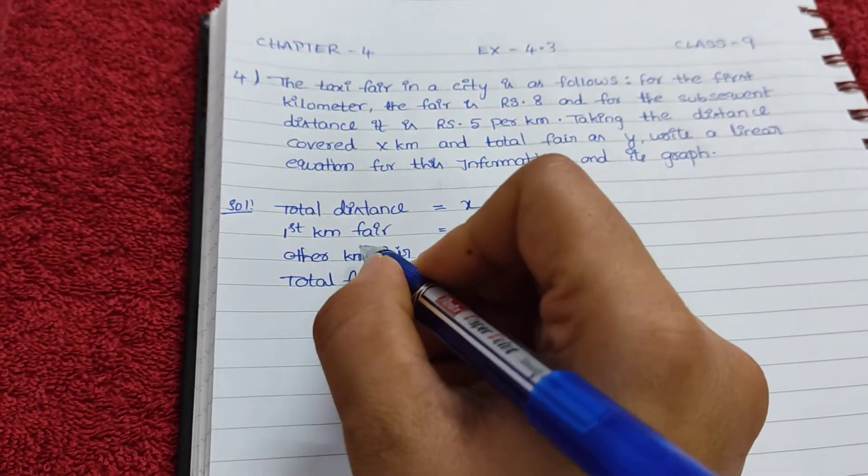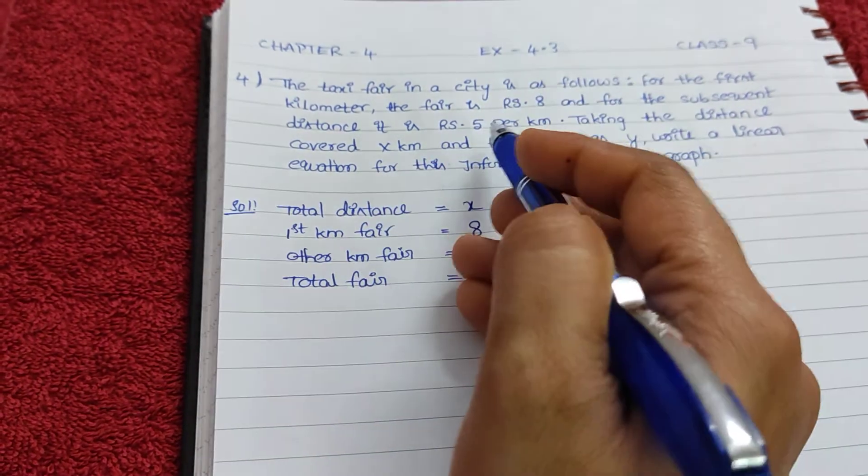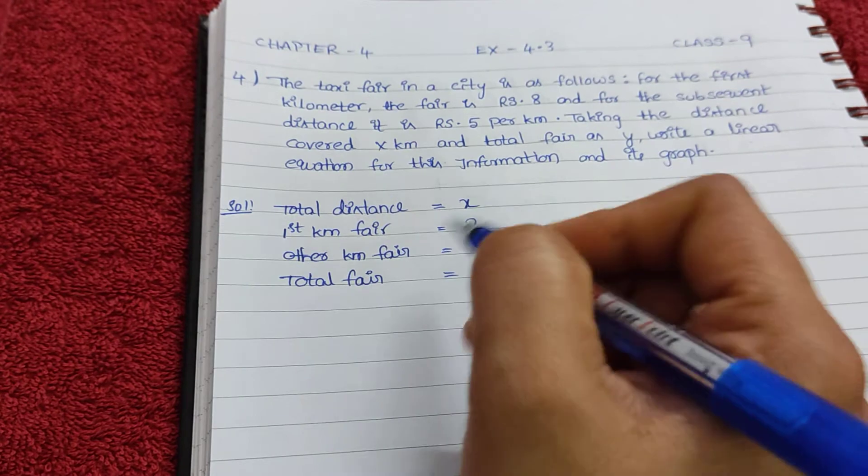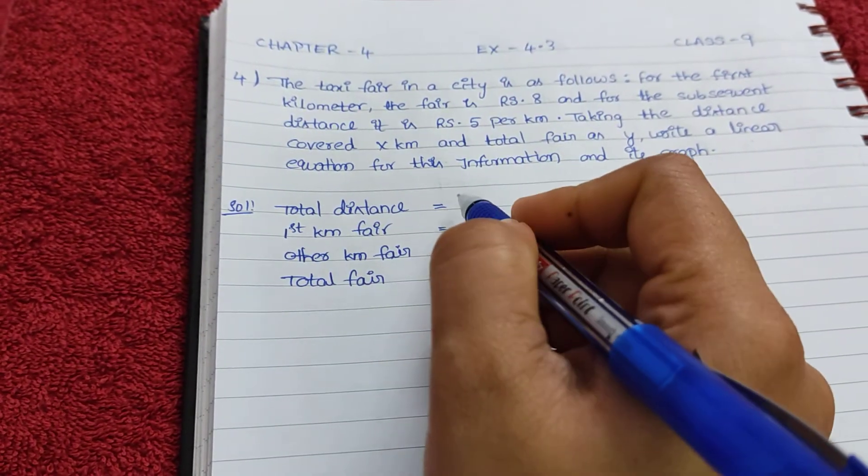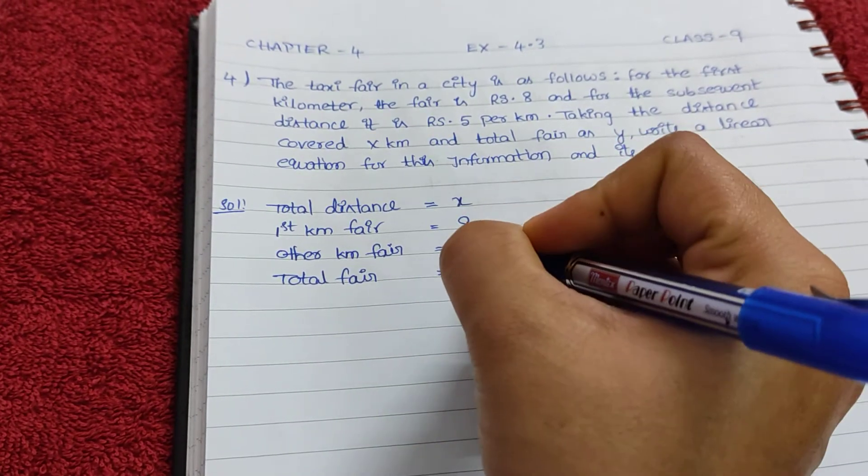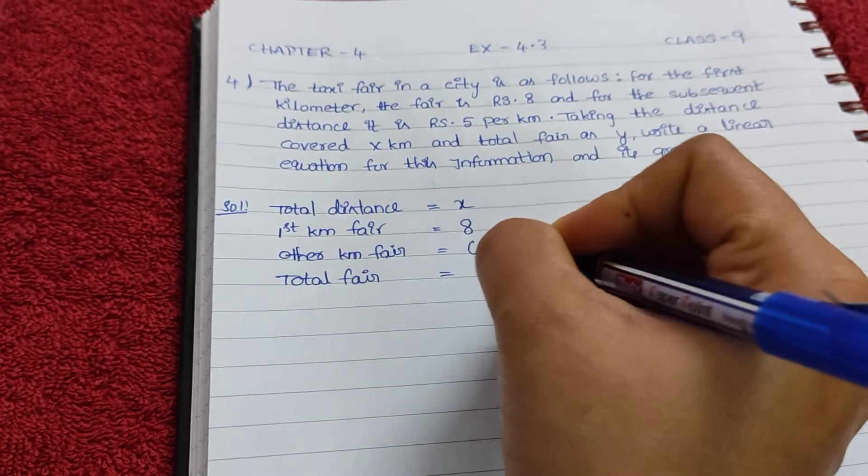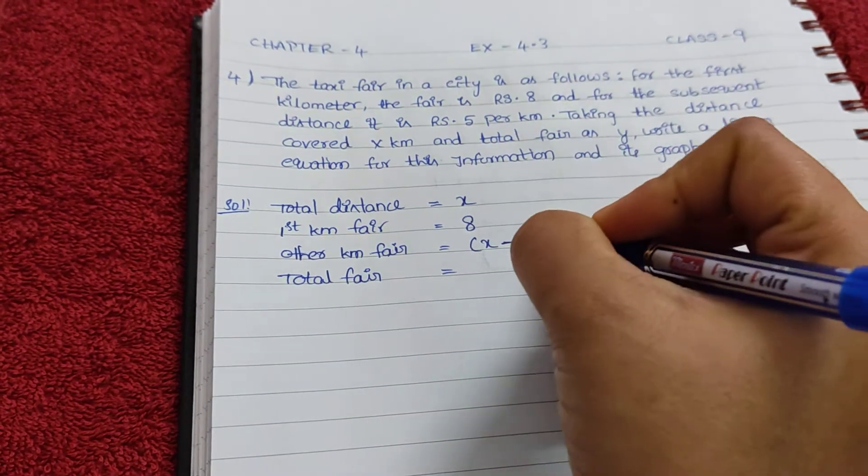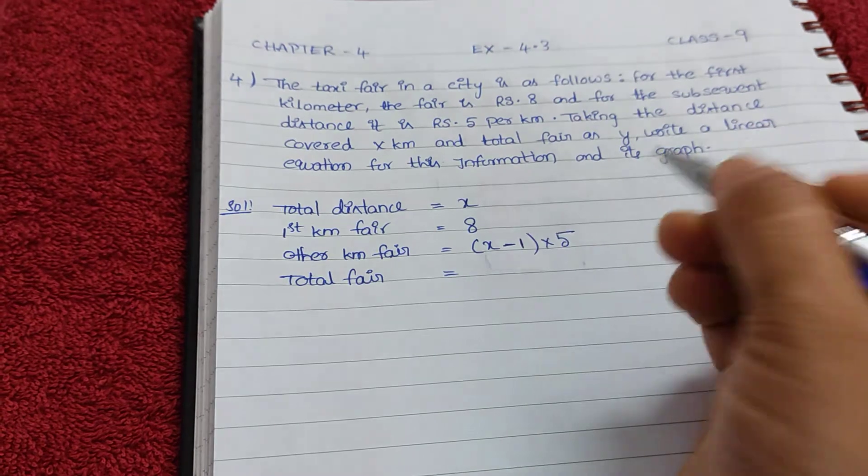First kilometer fare is how much? For the first kilometer fare is Rs. 8. Other kilometer, in the sense second kilometer and next—here they given subsequent distance—whenever we want to find out other kilometer fare, it means total minus this value.